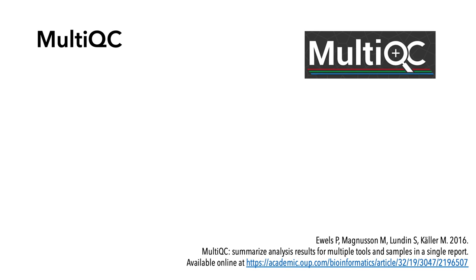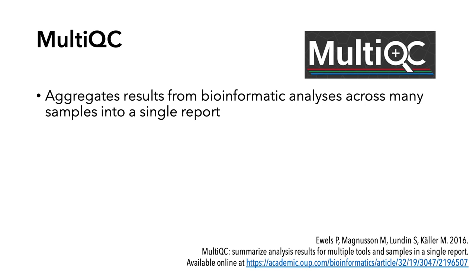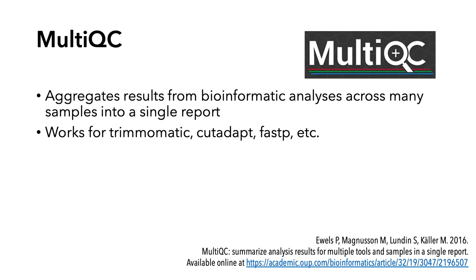The last tool I'm going to introduce is MultiQC. What it does is aggregate results from other QC analyses across many samples into a single report. If you have a hundred samples, you'd need to look through FastQC reports for each one — a lot of HTML files and going back and forth to detect patterns. MultiQC generates a single report from all of the individual reports. It works with Trimmomatic, CutAdapt, FastP, and all the popular QC tools. You can also create your own filters within the single report, and it's highly customizable.